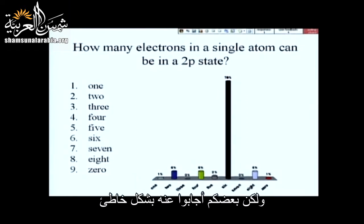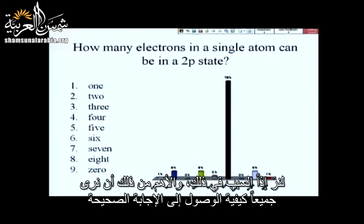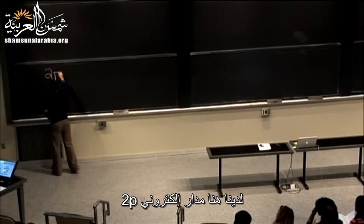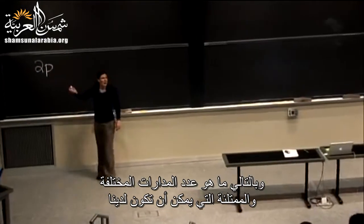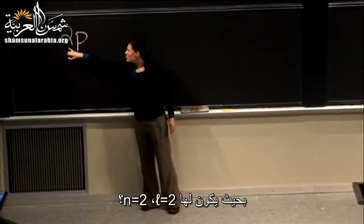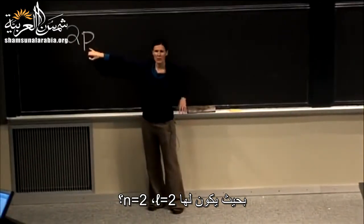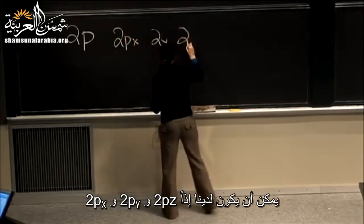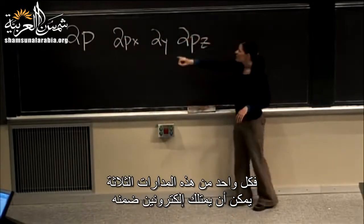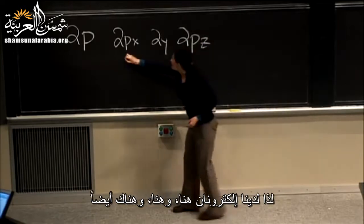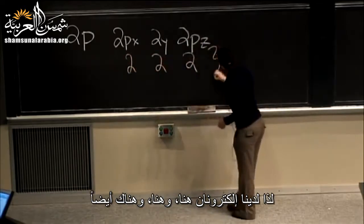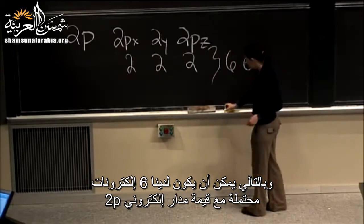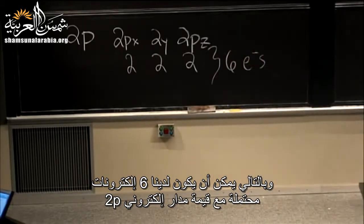Let's see how we can all get to the correct answer. If we have a 2p orbital, we can have how many different complete orbitals with n=2 and l=p — that's 3. We have the 2px, 2py, and 2pz orbitals. Each of these orbitals can hold two electrons, so we end up with a total of six electrons in the 2p state.